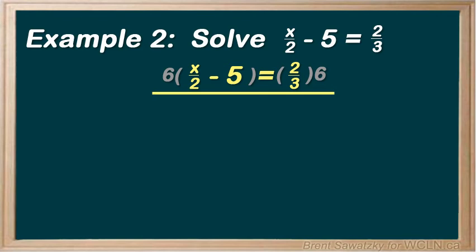We have 6x over 2 minus 5 times 6 or minus 30 equals, on the right, 2 times 6 or 12 over 3. And we reduce these down. 3x minus 30 equals 4. It now looks like a nice simple two-step problem.